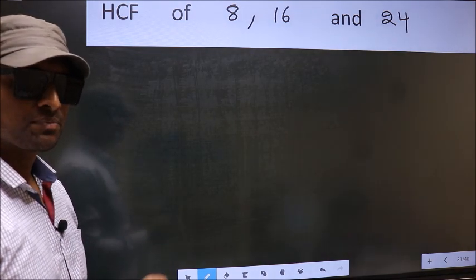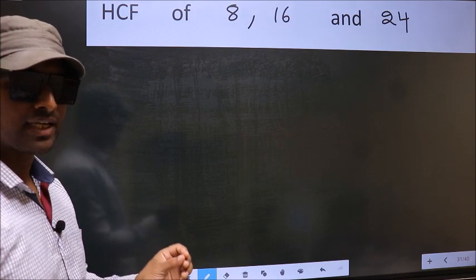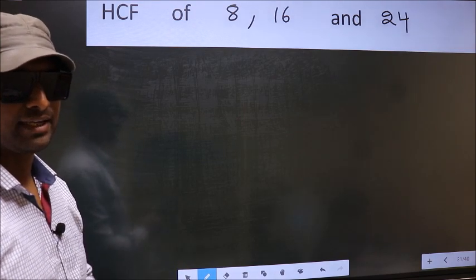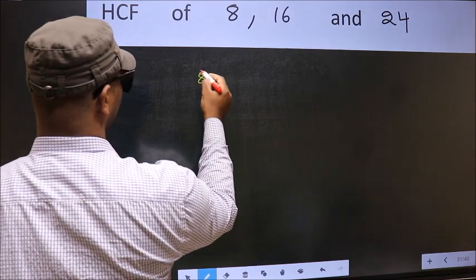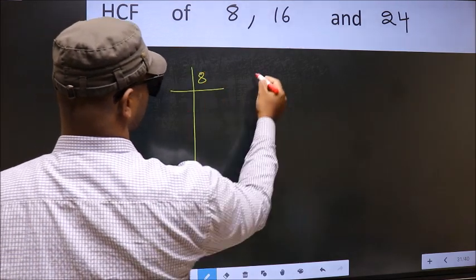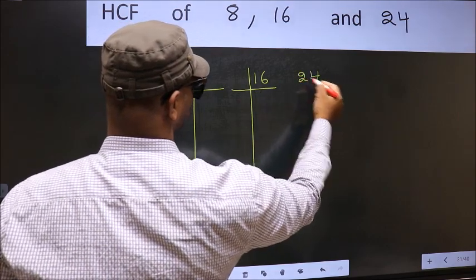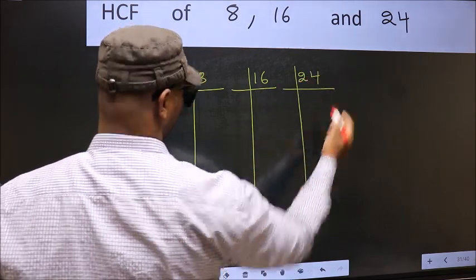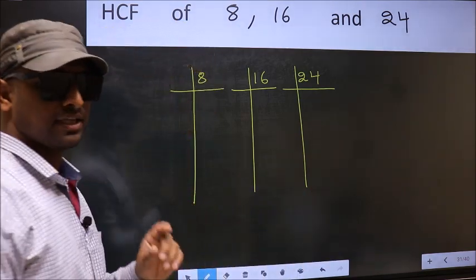To find the HCF, we should do the prime factorization of each number separately. What I mean is 8, 16, 24. This is your step 1.